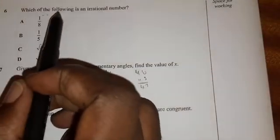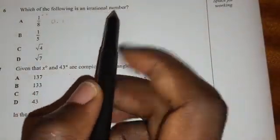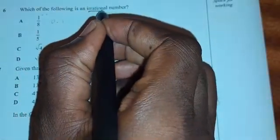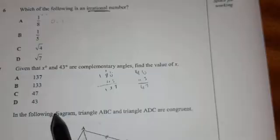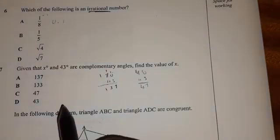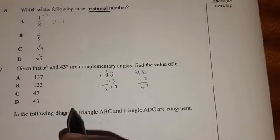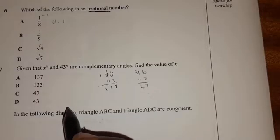Number six, which of the following is an irrational number? So what you have to understand first is what irrational number means. What is an irrational number? An irrational number is a number that cannot be expressed as a fraction or a number that cannot be expressed as a ratio of two integers.